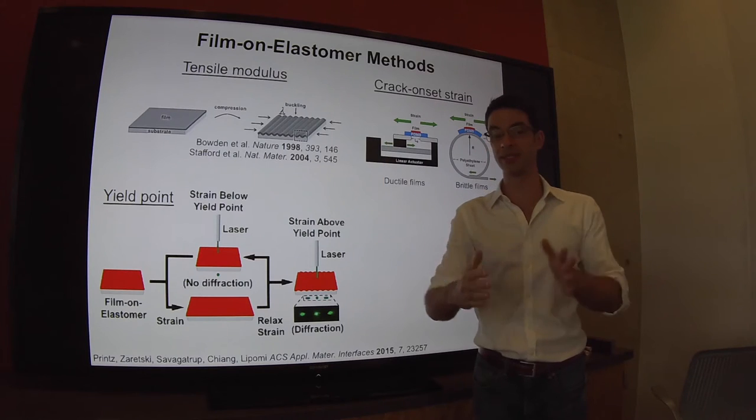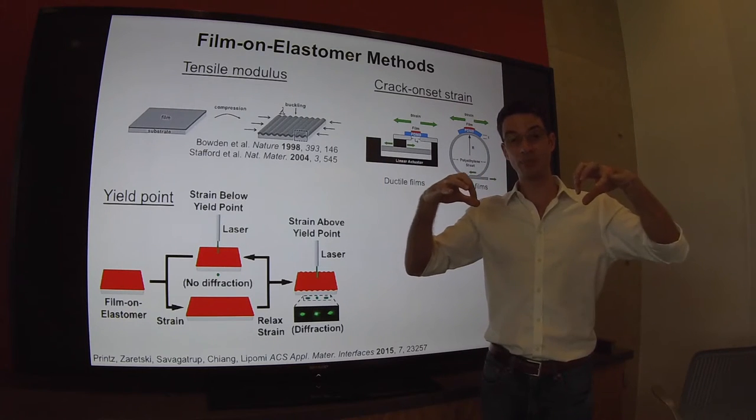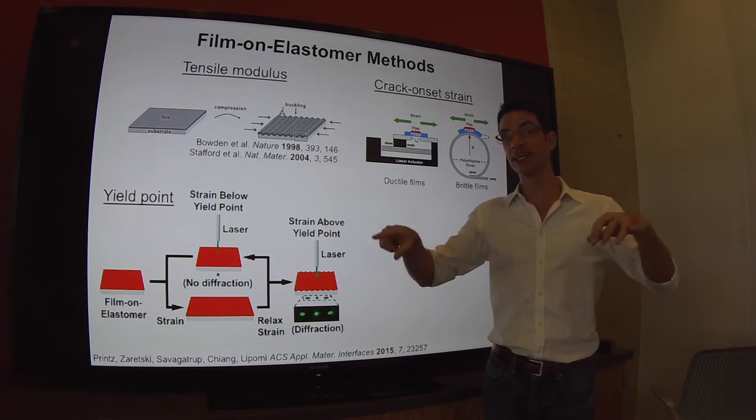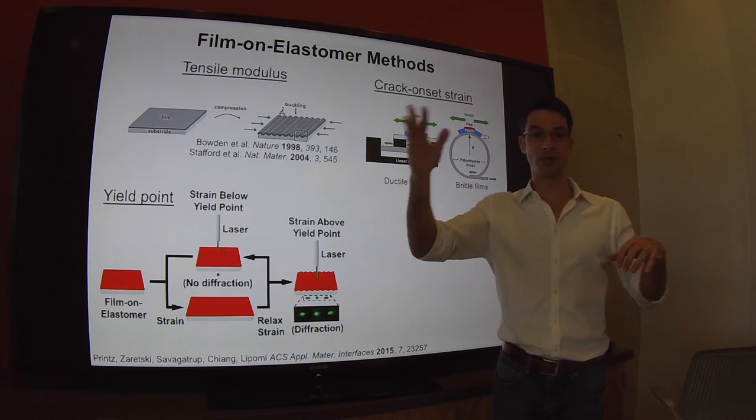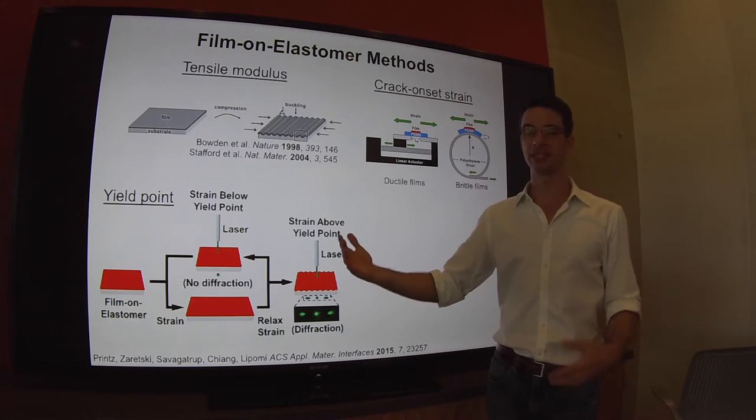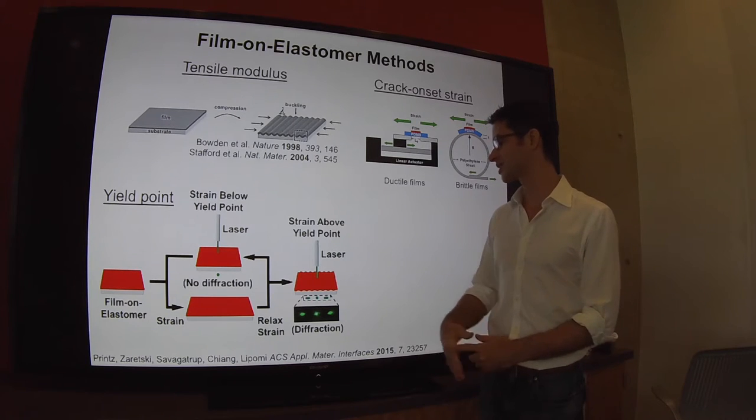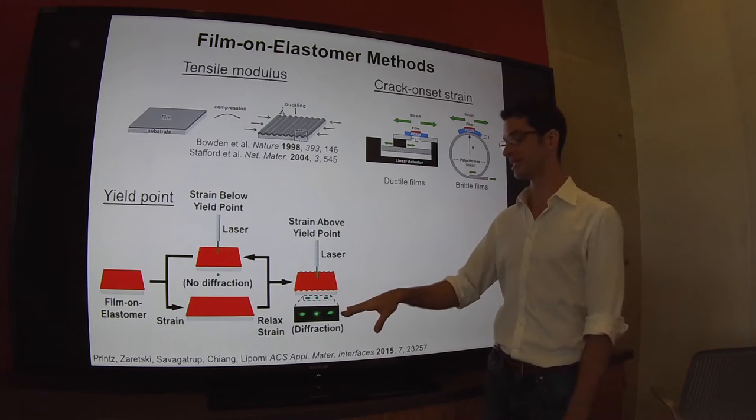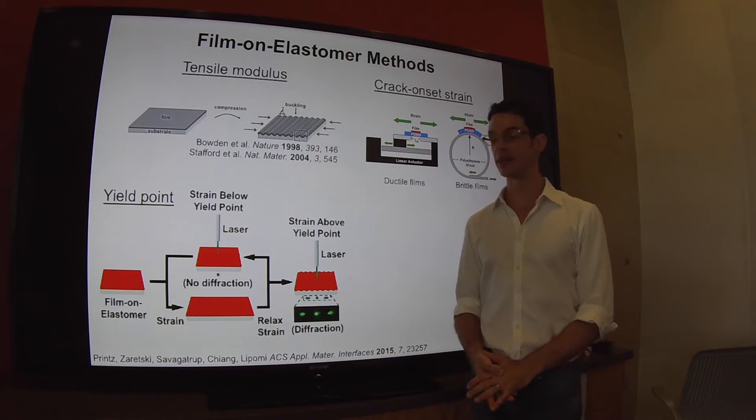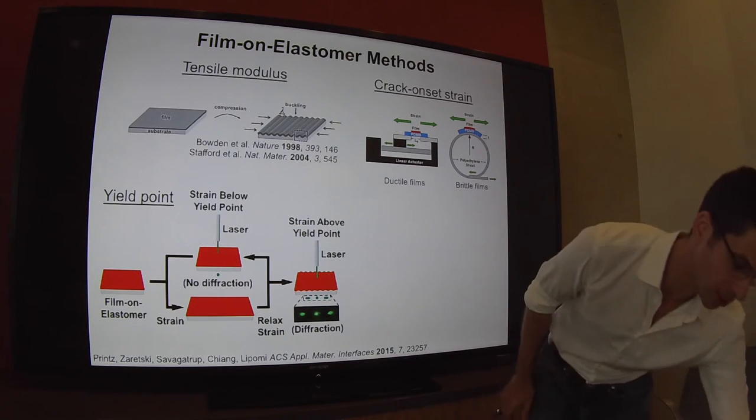You can even approximate the yield point by putting the film on an elastic surface and increasing the amount of strain incrementally: from zero to one percent to two percent back to zero, back to three percent back to zero, and so on. As soon as that film experiences plastic deformation, the film will buckle when returned to zero percent. You can shine a laser through them and detect the diffraction pattern on a screen, and when you see that, you know the film has surpassed its yield point.